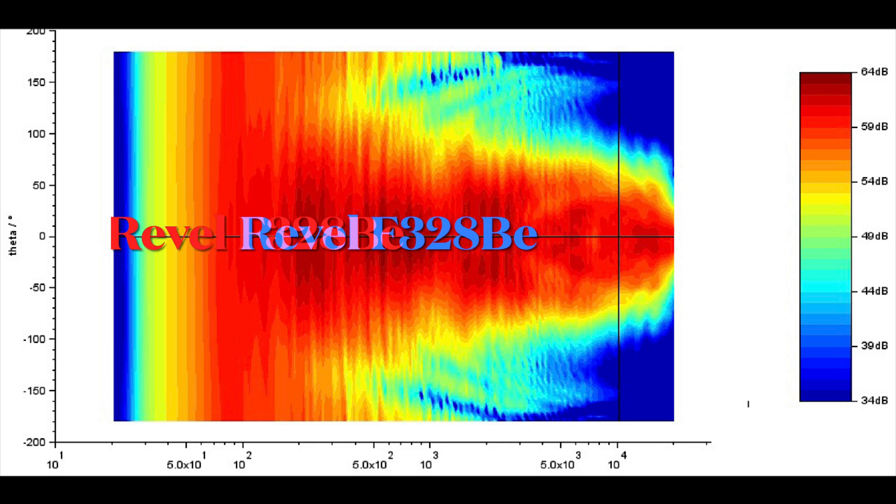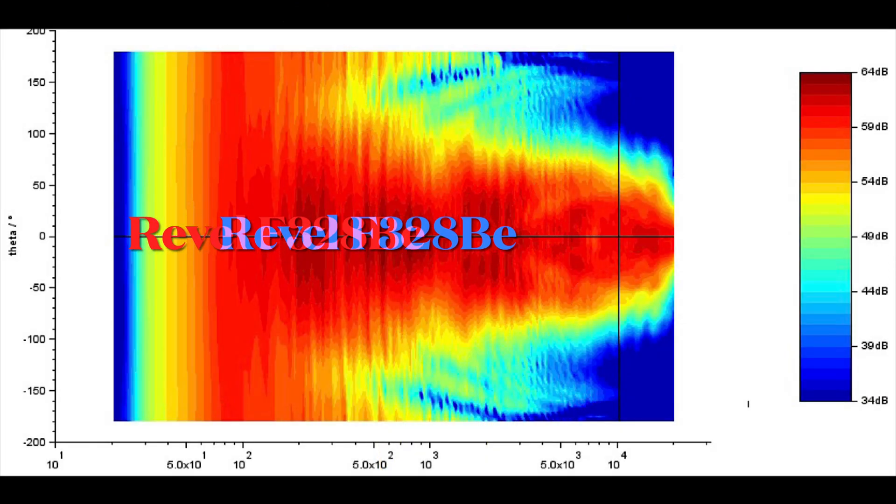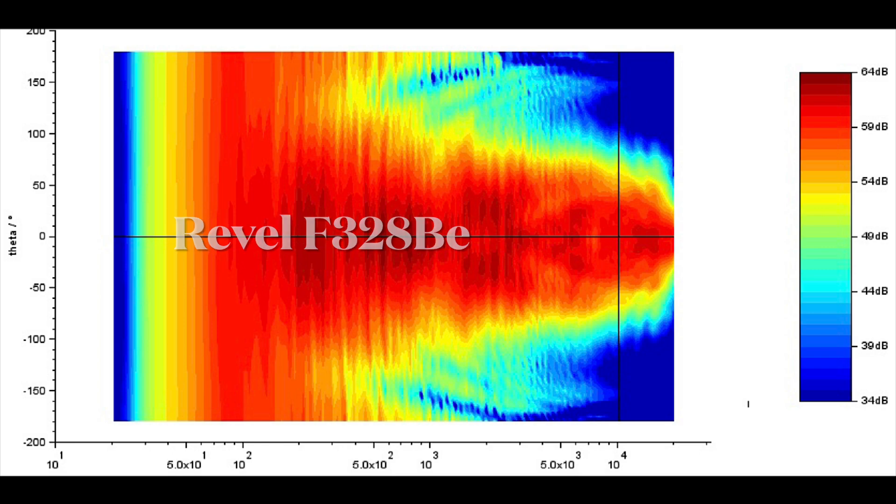Here is the directivity contour plot for Revel F328BE, one of the best speakers for its off-axis performance. The contour plot is the top view using different colors to indicate the sound pressure levels as indicated on the right.